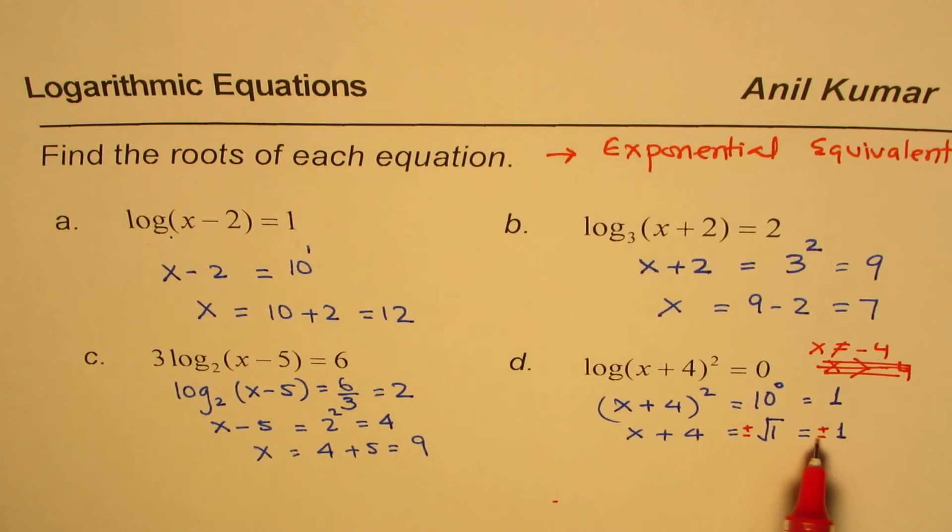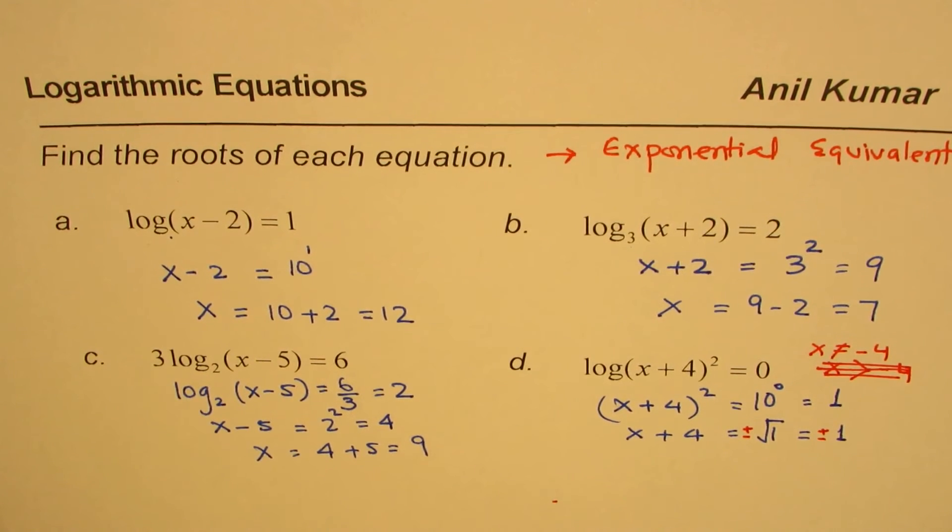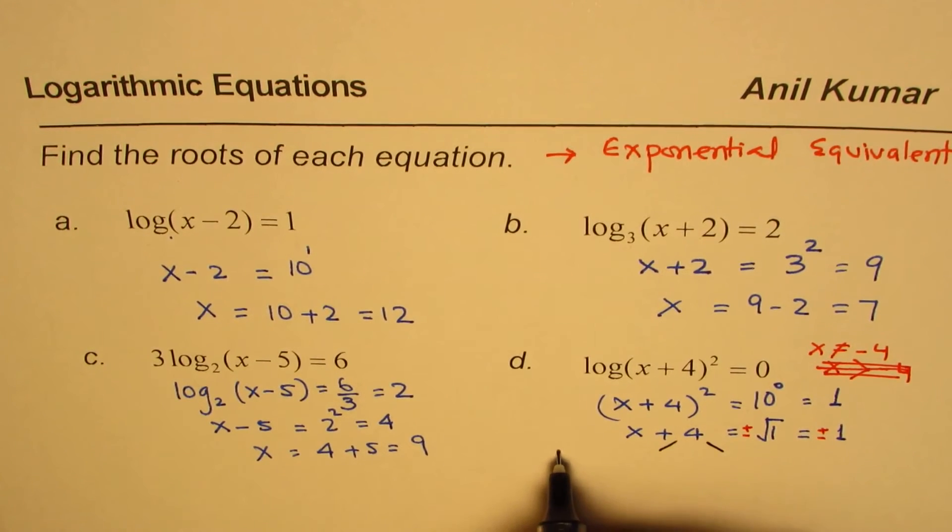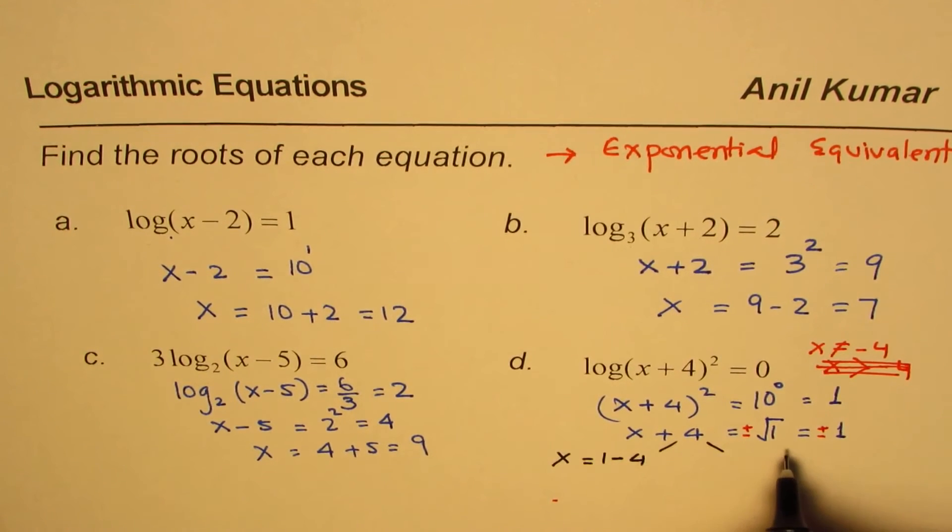So we'll take both plus and minus 1 as our values. That gives us two possible solutions. So one is x equals, if I'm taking plus 1 value, 1 minus 4, the other one will be x equals minus 1 minus 4.